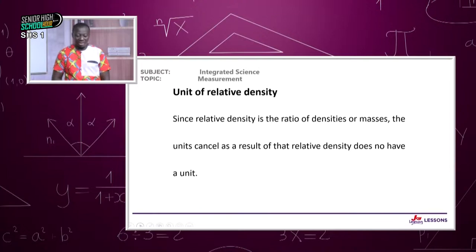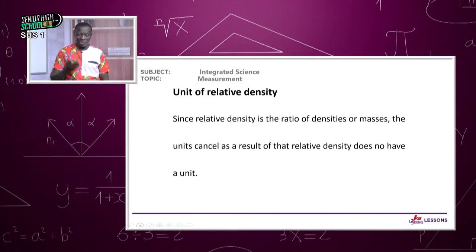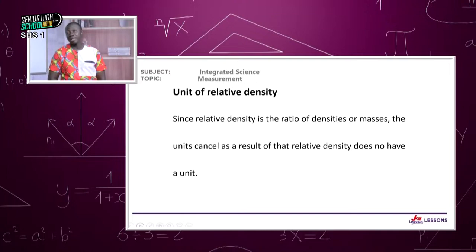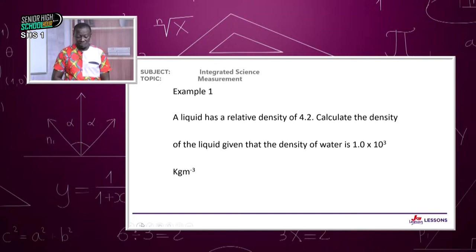Relative density does not have a unit. Since it is the ratio of densities, you are dividing kg/m³ by kg/m³, so the units cancel. Similarly, if using masses, you divide kilograms by kilograms — so relative density is dimensionless, with no unit.